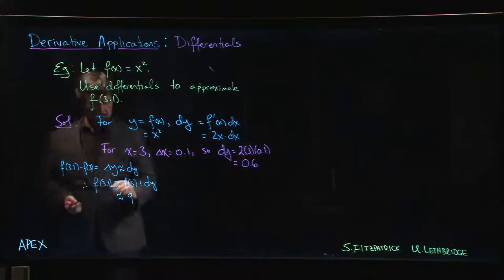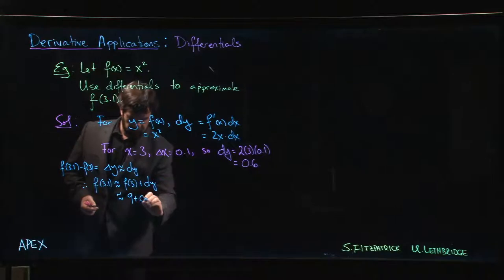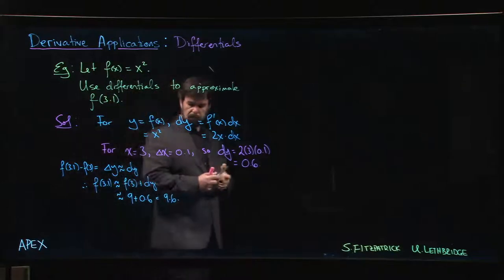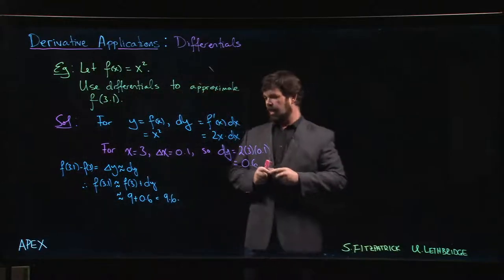f(3) equals 3 squared, which is 9. So it's 9 plus 0.6, which is 9.6. There's our approximation.